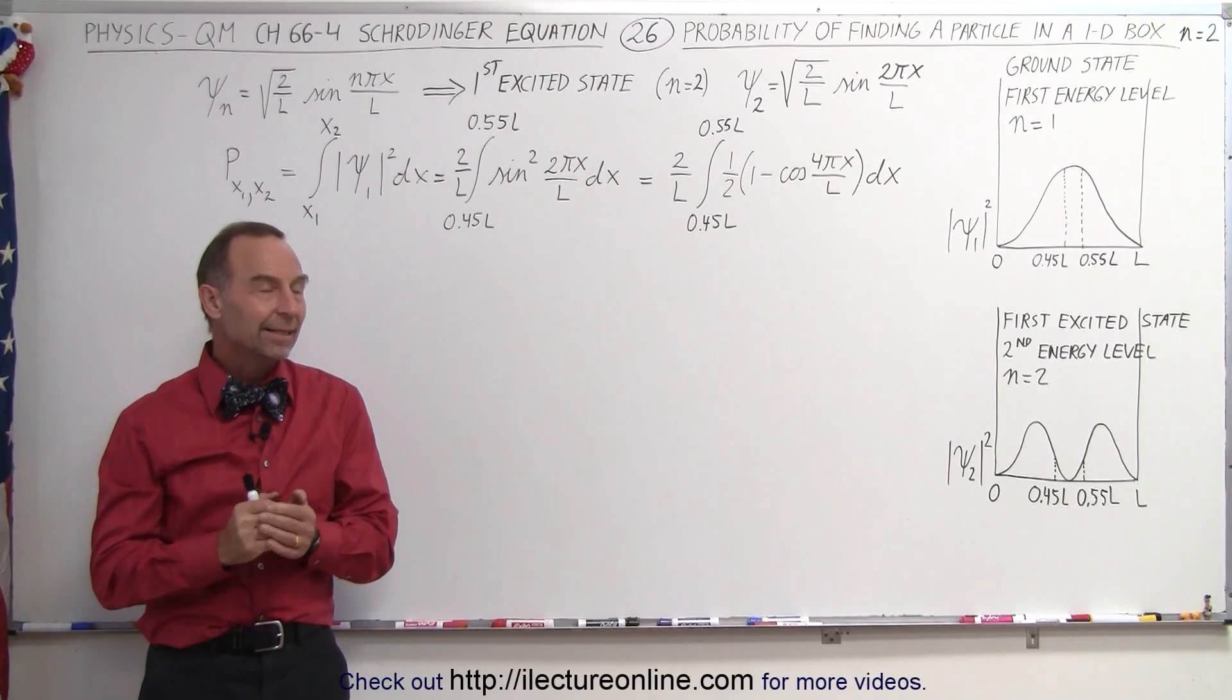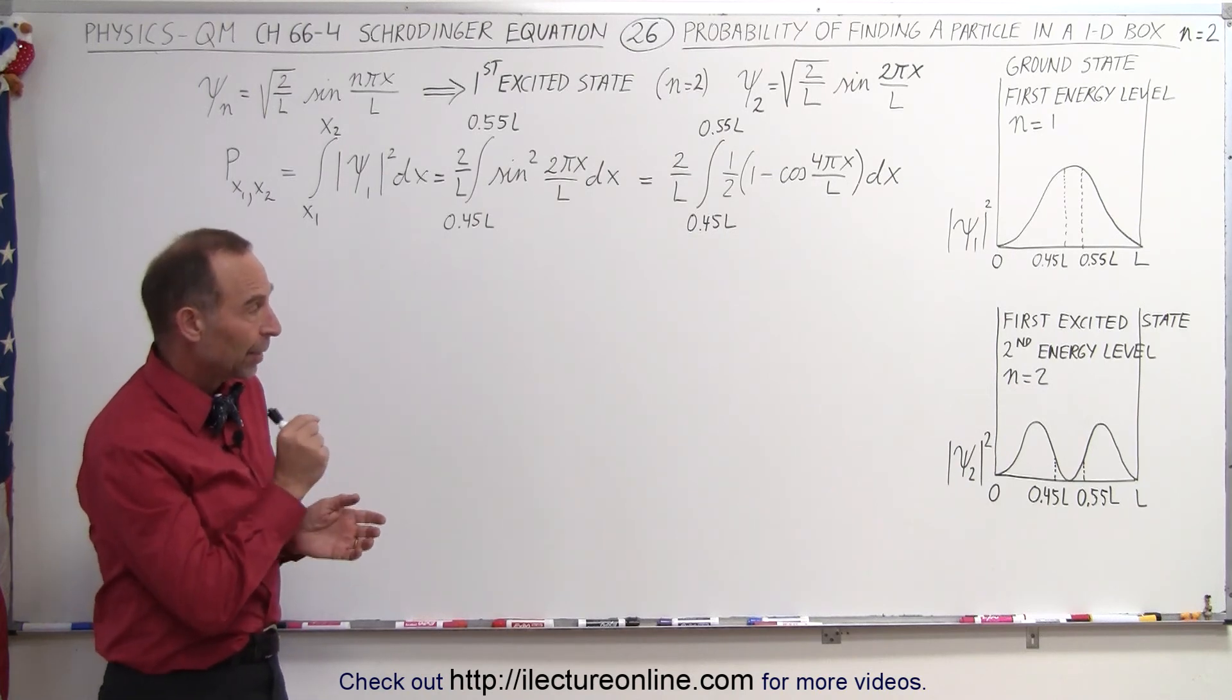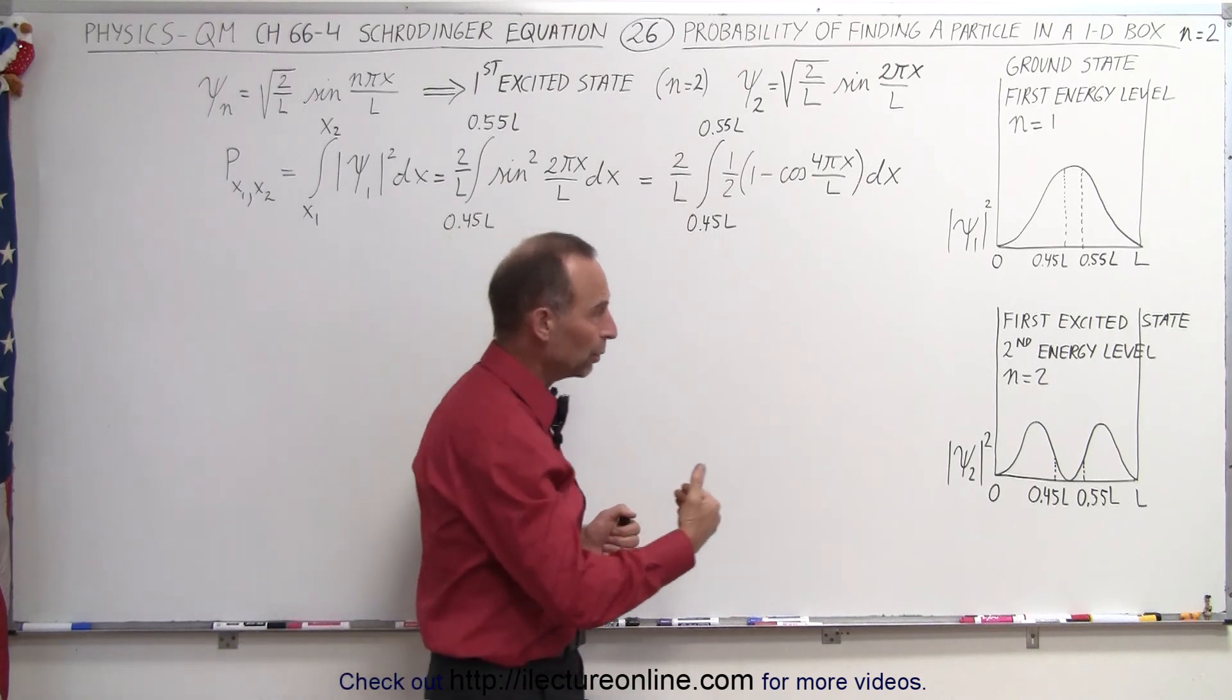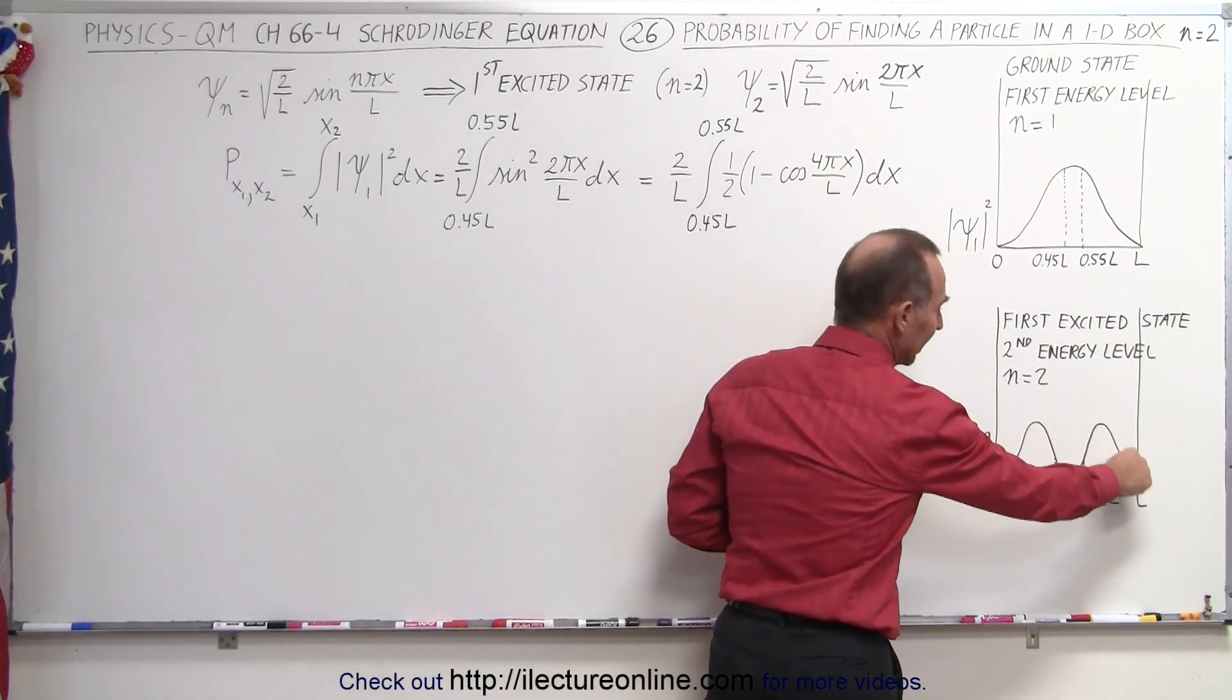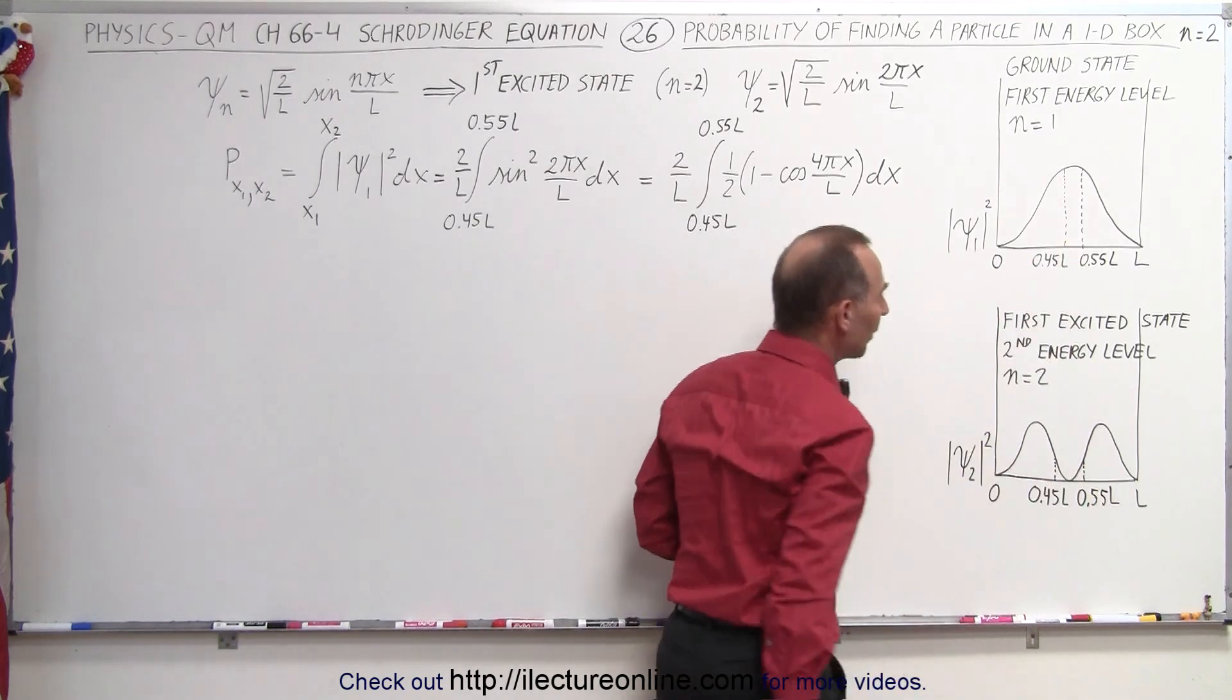Welcome to iLectureOnline. Now let's look at the probability density function when the particle in a one-dimensional box is now in the second energy state which we call the first excited state. You notice that its probability density function looks a lot different than it did when it was in the ground state.